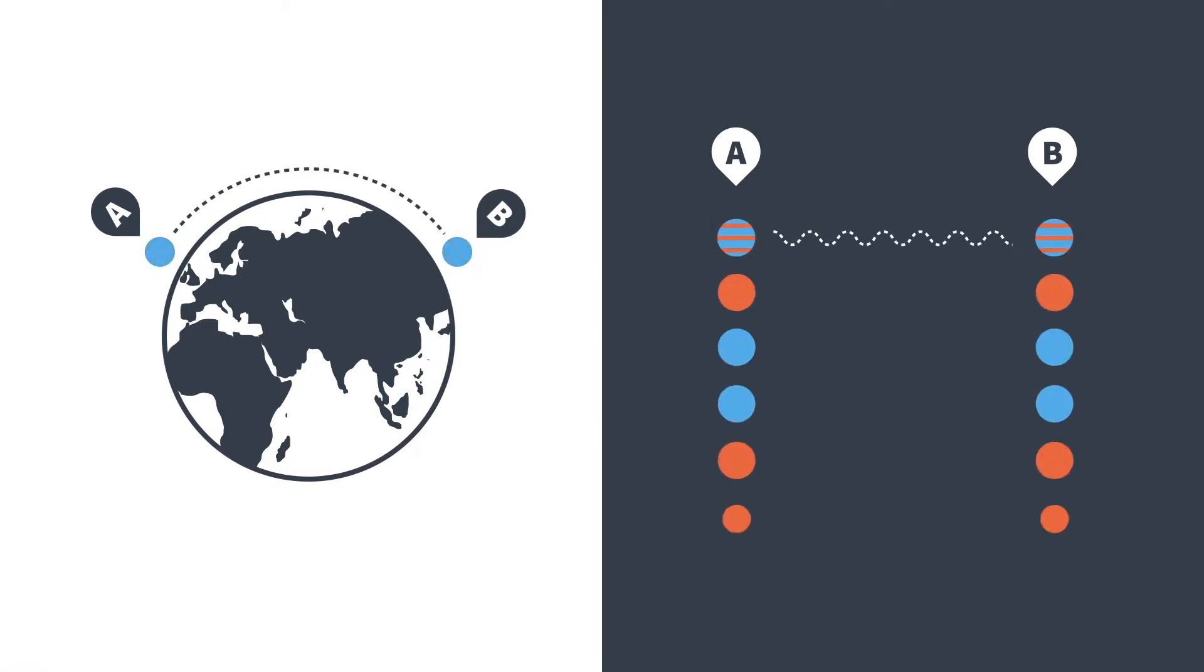When measured, these qubits will always yield 0 or 1 perfectly at random, but no matter how far away they are from each other, they will always yield the same outcome.